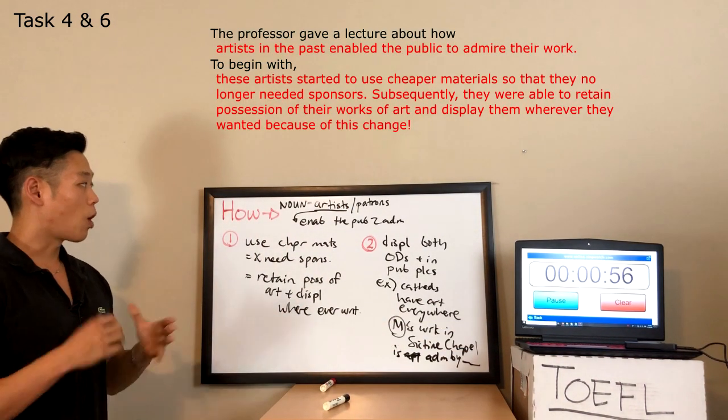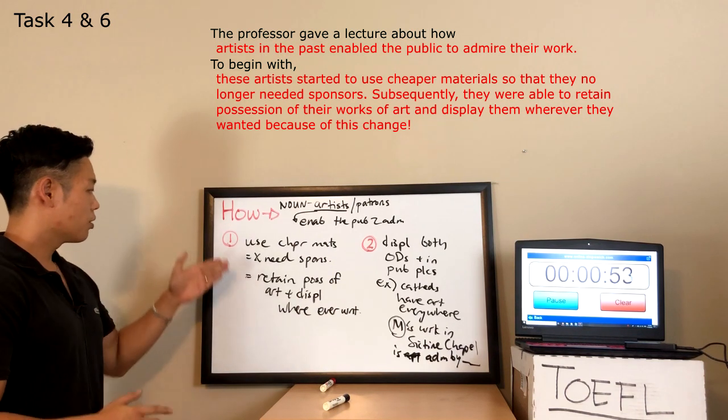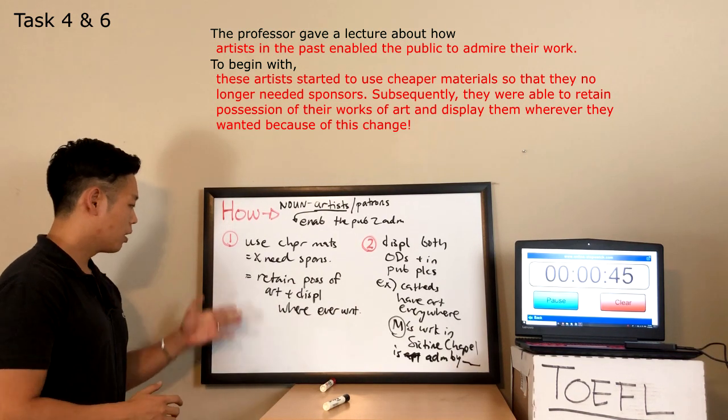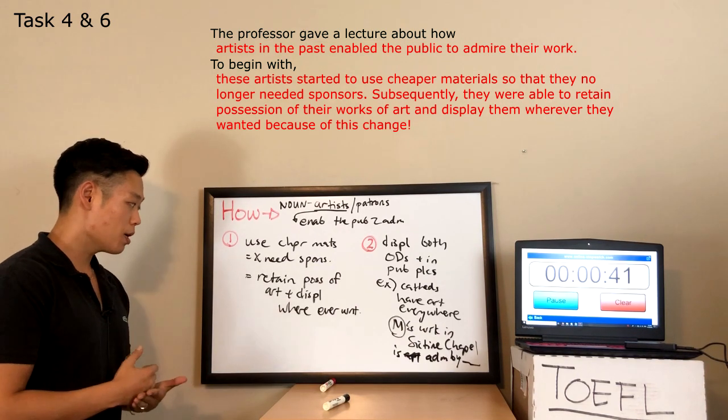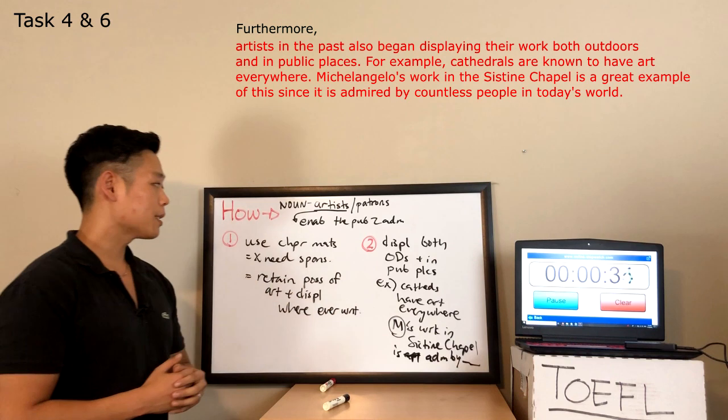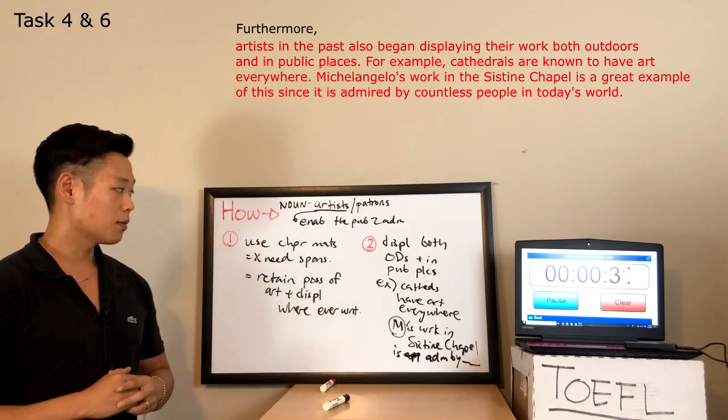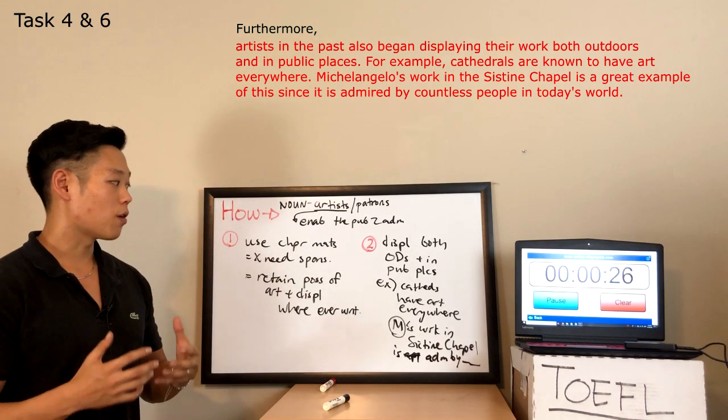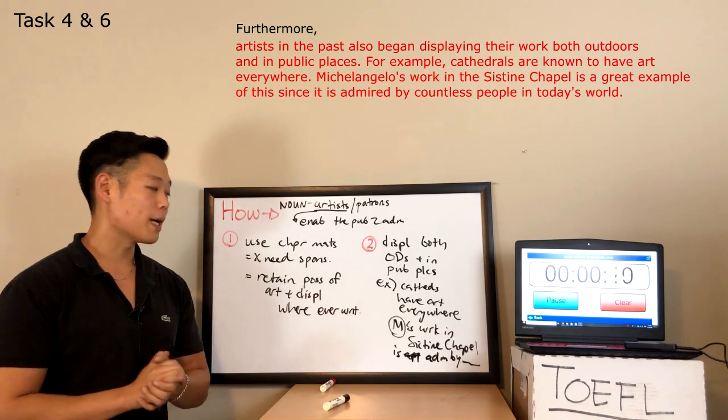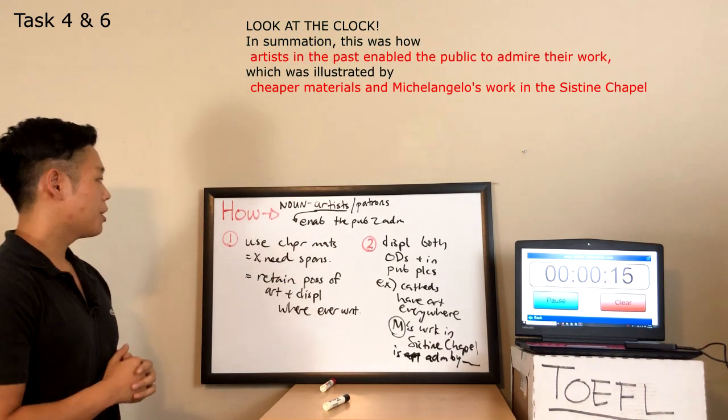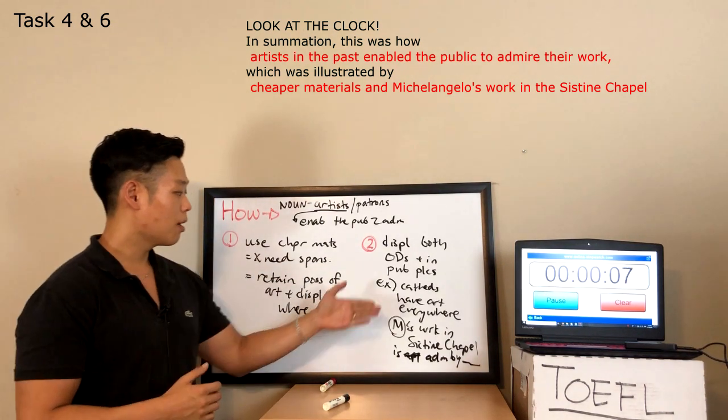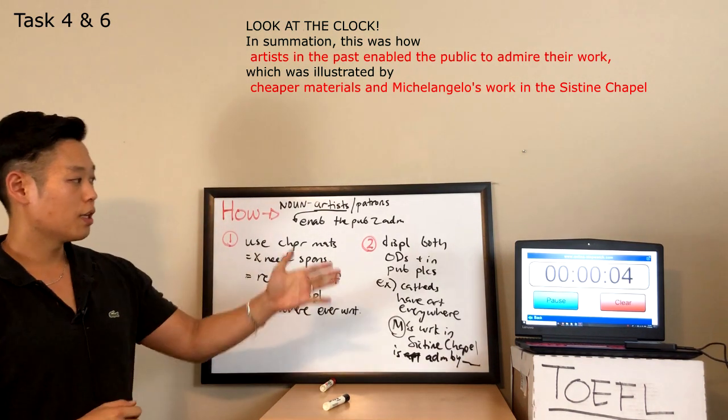The professor gave a lecture about how artists in the past enabled the public to admire their work. To begin with, these artists started to use cheaper materials so that they no longer needed sponsors. Subsequently, they were able to retain possession of their works of art and display them wherever they wanted because of this change. Furthermore, artists in the past also began displaying their work both outdoors and in public places. For example, cathedrals are known to have art everywhere. Michelangelo's work in the Sistine Chapel is a great example of this since it is admired by countless people in today's world. In summation, this was how artists in the past enabled the public to admire their work, which was illustrated by cheaper materials and Michelangelo's work in the Sistine Chapel, given by the professor in the lecture.